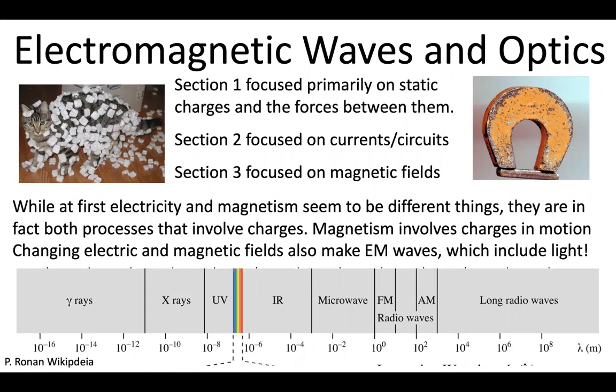If you remember, what we first talked about in Section 1 are the forces between electric charges at rest — Coulomb's law, static electricity. Then we started talking about how charges move, talked about currents quite a bit, and then started to talk about magnetic fields, which feels like something very different than electric fields, but in fact they're tightly related. We saw that magnetic fields are generated by charges in motion, just like electric fields are generated by charges that can be at rest. So there is a deep connection between electricity and magnetism, and one of the places that connection is expressed most clearly is in electromagnetic waves, which are in fact light.